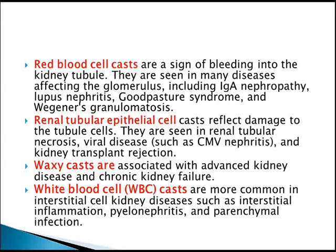Renal tubular epithelial cell casts reflect damage to the tubular cells. They are seen in renal tubular necrosis, viral diseases, CMV nephritis, and kidney transplant rejection. Waxy casts are associated with advanced kidney disease and chronic kidney failure. WBC casts are more common in interstitial kidney diseases such as interstitial inflammation, nephritis, pyelonephritis, and parenchymal infections.